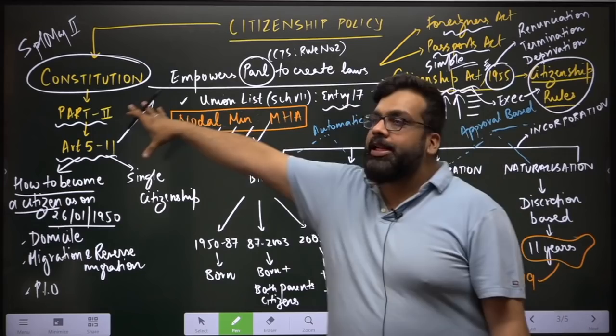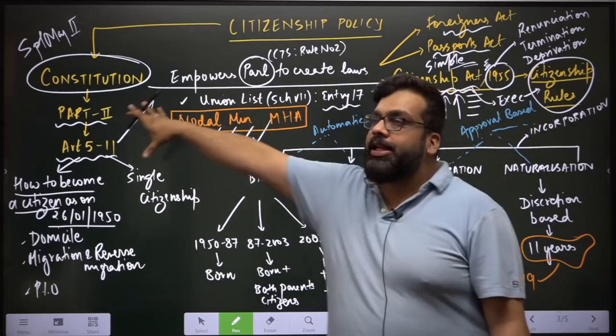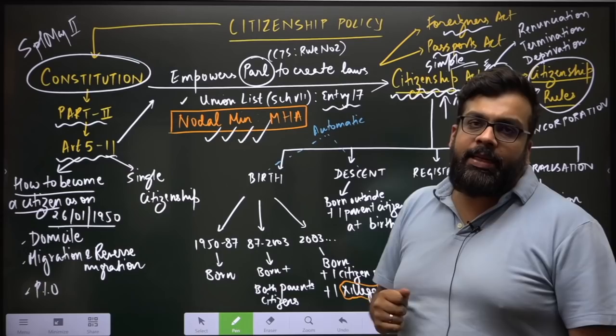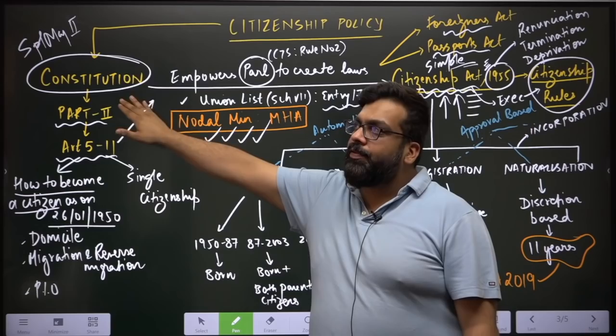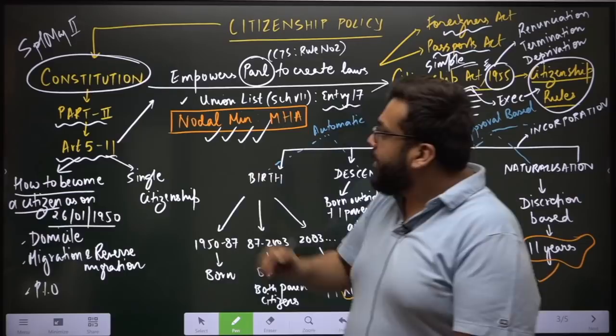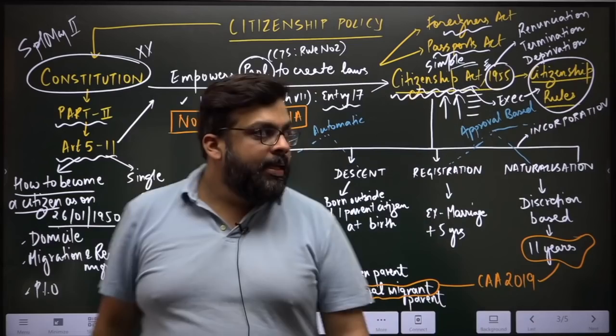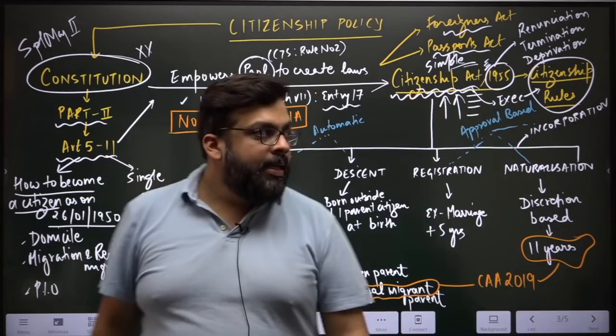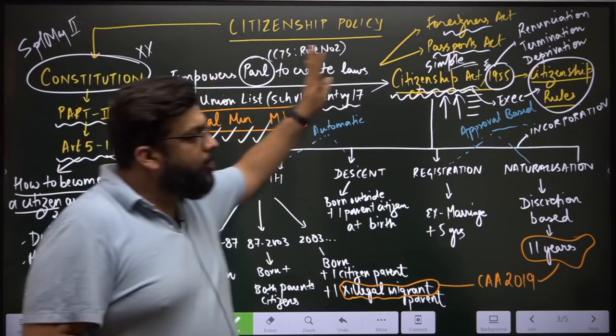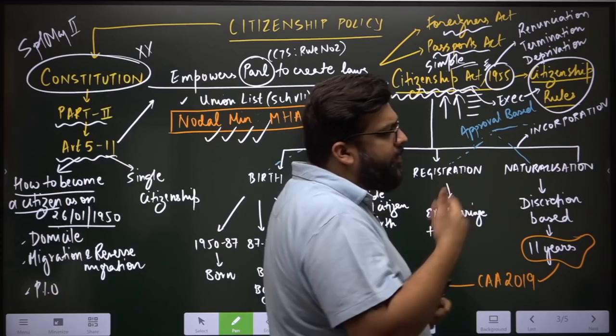This is impeccably wise because it is easier to change the Act than constitutional provisions. A simple majority suffices for the Act, whereas constitutional changes require a higher majority. There has never been any change to the constitutional provisions themselves. Most of the changes have happened to the Citizenship Act of 1955 in 1987, 2003, and 2019.